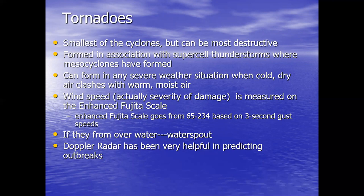The wind speed or the severity of damage is measured on the Enhanced Fujita scale, named after Ted Fujita, who was a famous meteorologist at the University of Chicago. He did extensive research into tornadoes across the Midwest and wherever he found them. The Fujita scale goes from 65 miles per hour to 234 miles per hour, based on a three-second wind gust. If tornadoes form over water they're called waterspouts, and Doppler radar has been extremely helpful in identifying what clouds might be capable of producing tornadoes.